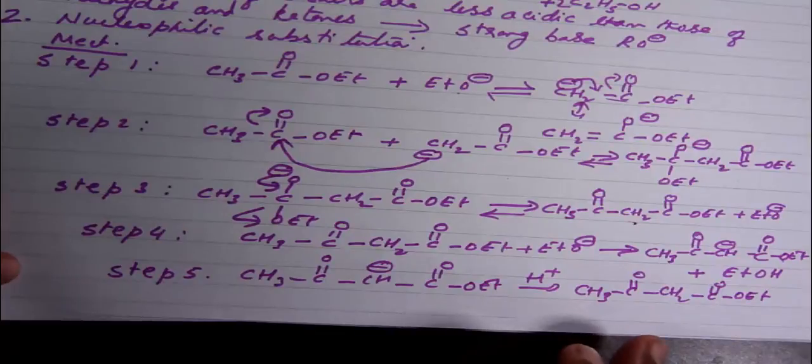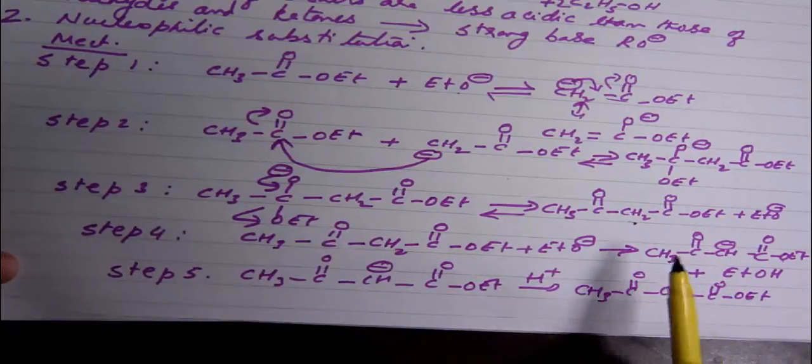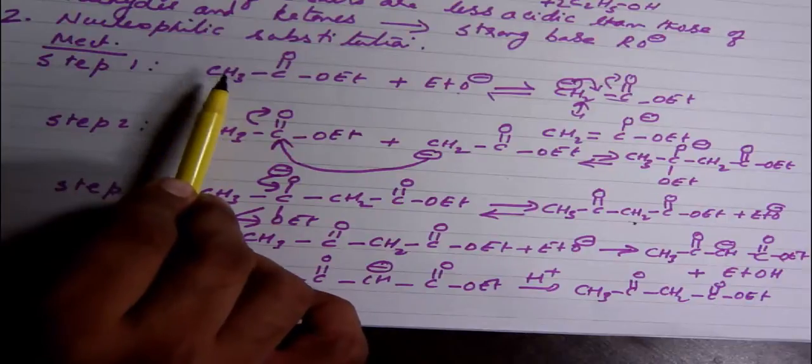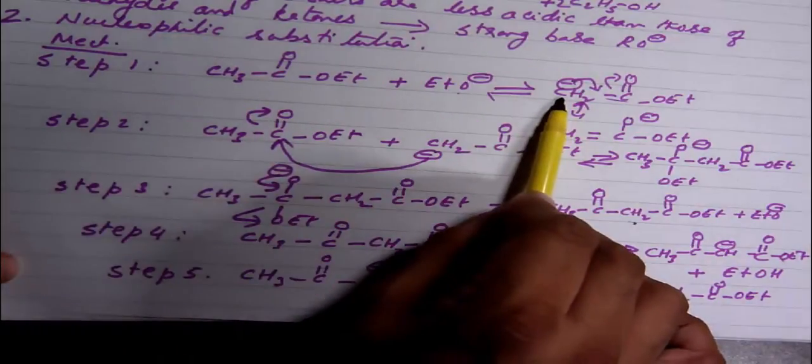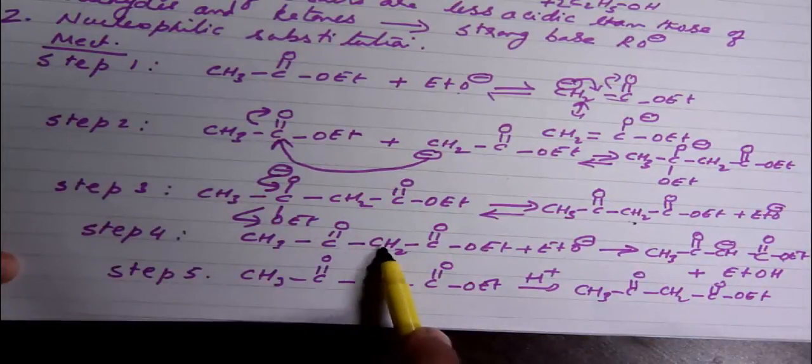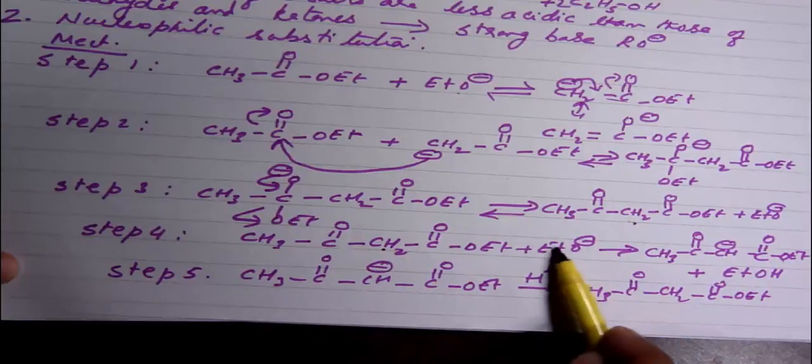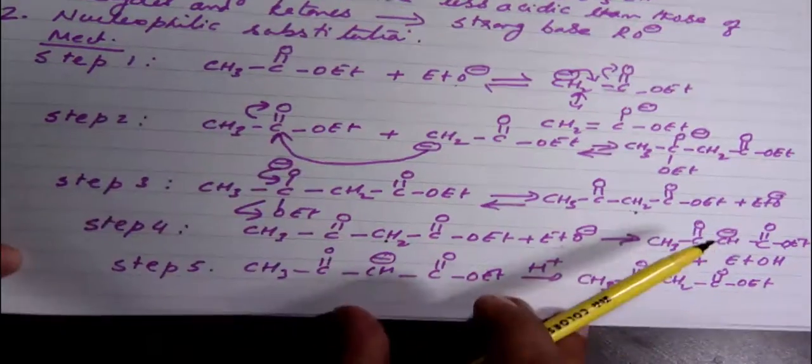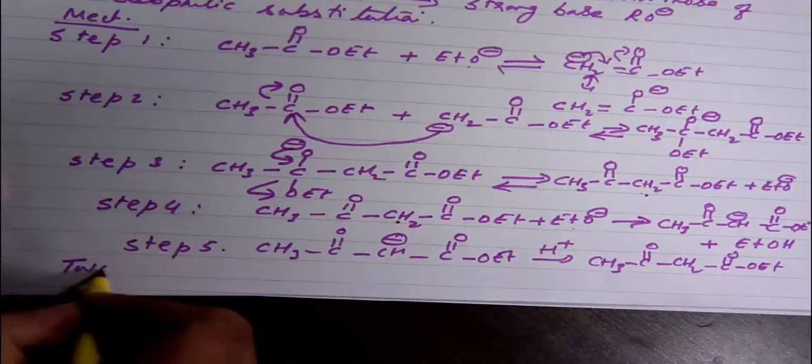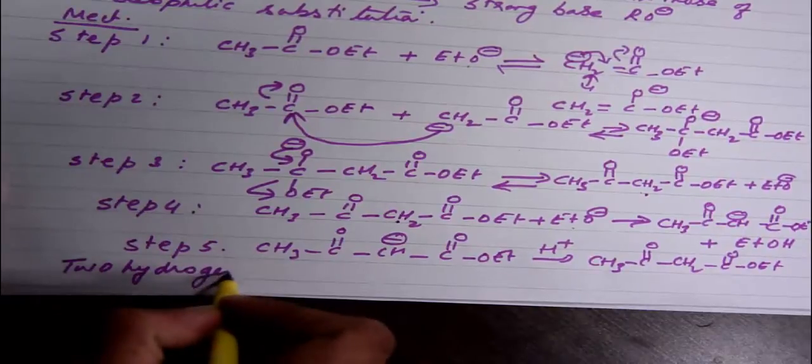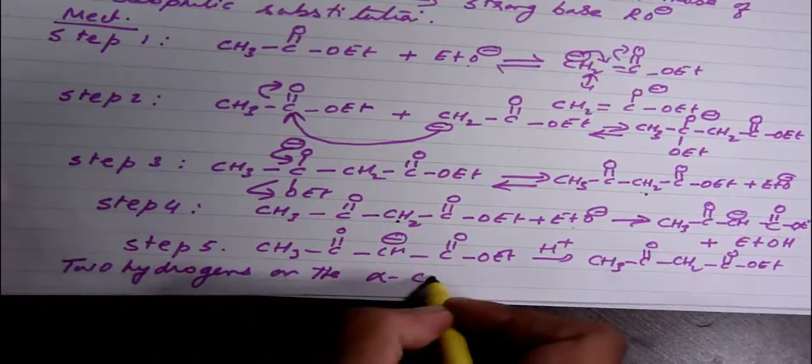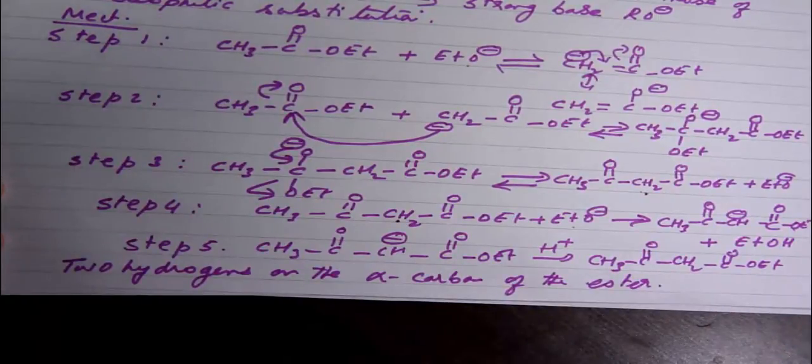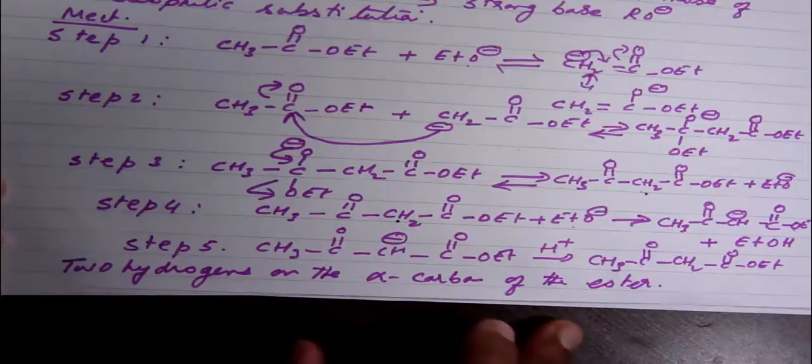Now the most important part here that we need to understand is that if you want the reaction to go to completion, which means you're going to reach the end of step four, you should have two hydrogens on the alpha carbon of the ester. Because the first hydrogen is being lost to create a carbon anion, and the second hydrogen is lost in step four in order to make the reaction go irreversible. So if you want to get a good yield of the product, you must have two hydrogens on the alpha carbon of the ester. This is very important to make the reaction go forward.